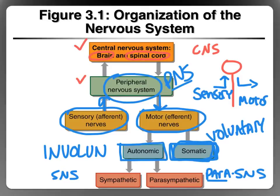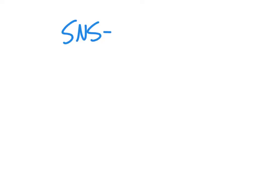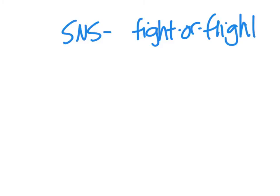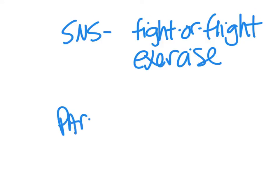The two divisions of the autonomic nervous system are the parasympathetic and the sympathetic. The sympathetic, which you've heard all about, is basically our fight-or-flight division, and this is the division that is predominant during exercise. At any time, remember that nothing is ever a hundred percent or zero percent — the SNS and the para-SNS are both active. But depending on what's going on, one of these divisions is going to be more active than the other, and that one is going to take control over the body at that point in time.